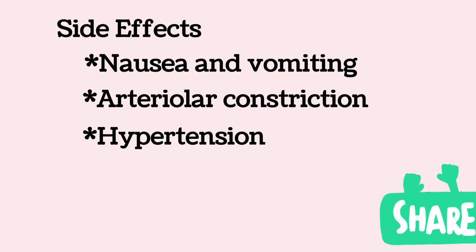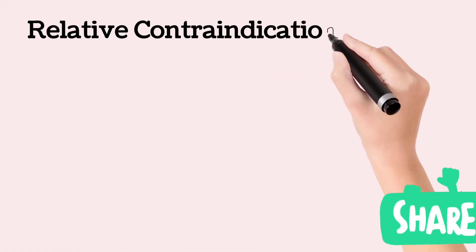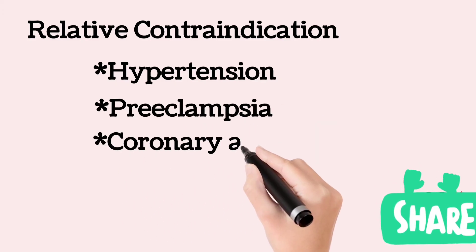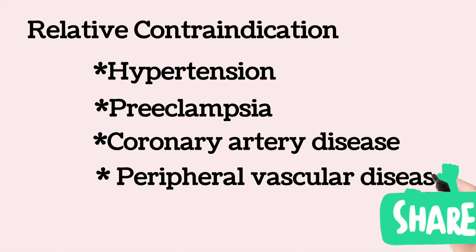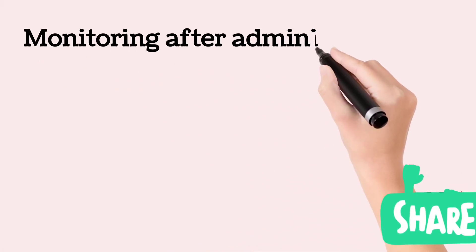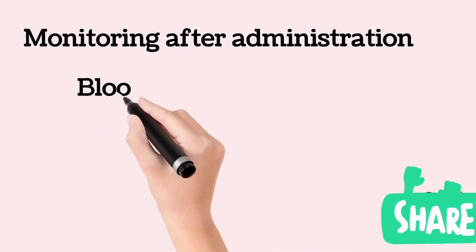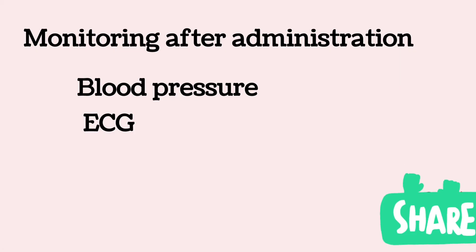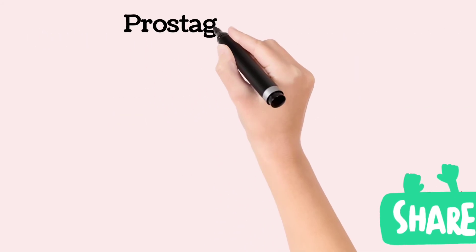Patients at greatest risk are those with pre-existing hypertension, though sudden and marked hypertension may also occur in previously normotensive patients. Relative contraindications to ergot alkaloids include hypertension, preeclampsia, peripheral vascular disease, and ischemic heart disease. Blood pressure and ECG should be monitored closely after administration, especially in the setting of hemorrhage. Treatment of ergot alkaloid-induced vasoconstriction and hypertension may require administration of potent vasodilators such as nitroglycerin or sodium nitroprusside.